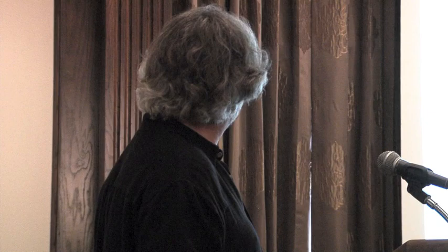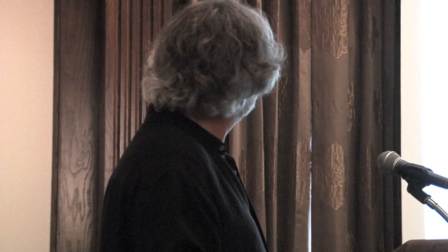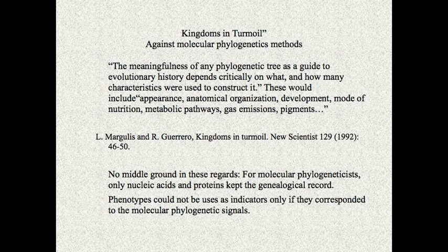Woese sends Margulis a paper when the halophiles came in as archaebacteria. Lynn writes back — I always had the whole letter but I'm away from home. She writes to Carl: 'A typical Margulis cell — the archaebacteria, the spirochetes — needs discussion.' In 'Kingdoms in Turmoil,' Lynn and Ricardo Guerrero write a paper in New Scientist in 1992, writing that 'the meaningfulness of any phylogenetic tree as a guide to evolutionary history depends critically on what and how many characteristics were used to construct it. These would include appearance, anatomical organization, development, mode of nutrition, metabolic pathways, gas emissions, pigments, and so on.'